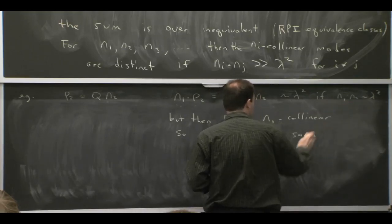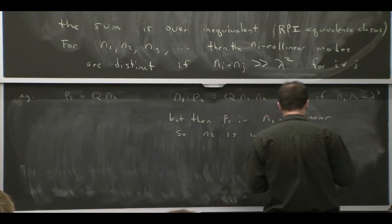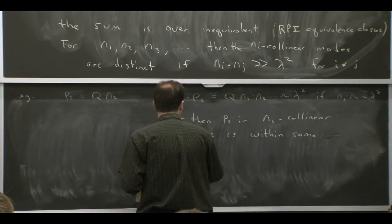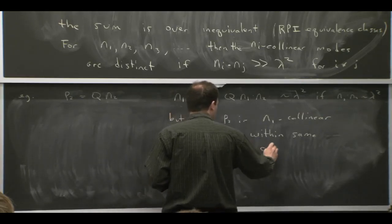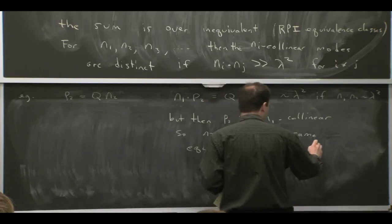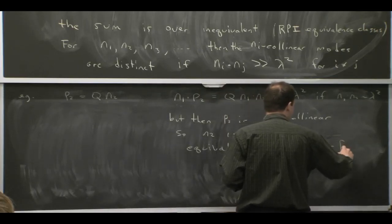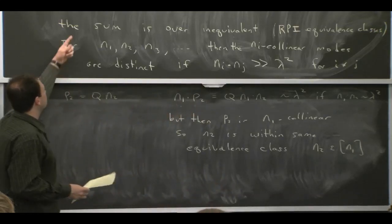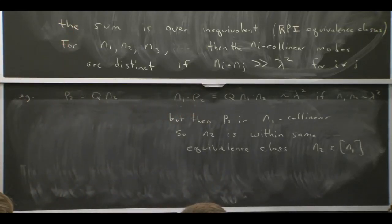So if this is true, that the dot products of order lambda squared, then n1 and n2 are within the same equivalence class. Which, if you wanted some notation, you could say n2 is in the class defined by n1. So you could really think of this as a sum over classes, but I guess usually people just write sum over n.